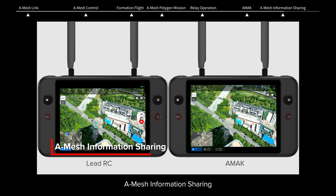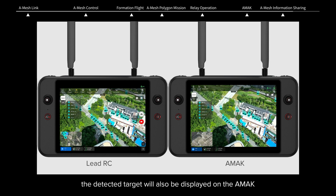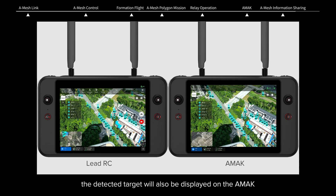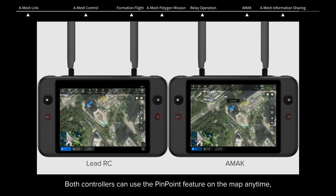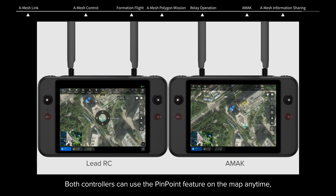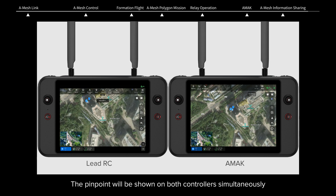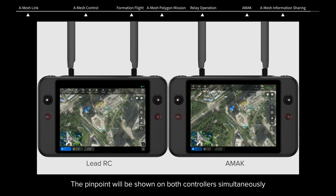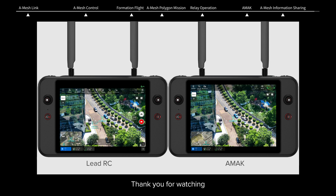AMESH Information Sharing: When using AMAC, if the lead controller activates the AI recognition feature, the detected target will also be displayed on the AMAC. Both controllers can use the pinpoint feature on the map at any time, and the pinpoint can be edited. The pinpoint will be shown on both controllers simultaneously. This is how to use the A-Mesh feature. Thank you for watching.